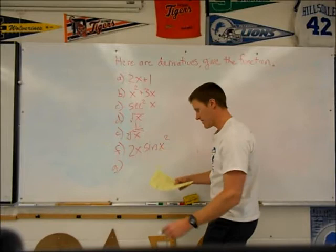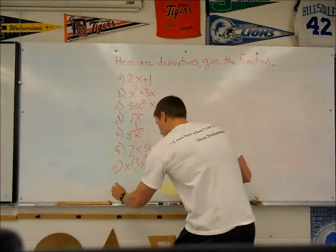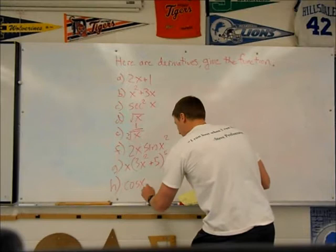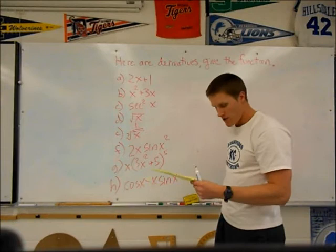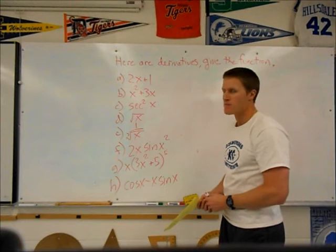Let's do another one. x times quantity 3x squared plus 5 to the fifth and one more cosine X minus X sine X. Spend some more time pause your video now and try to figure these out. Don't go crazy here if you're not getting something initially, let's move on with us. I'll give the answers momentarily.